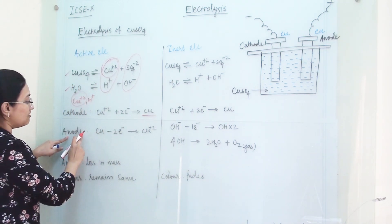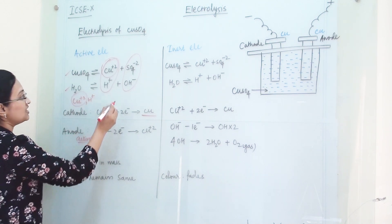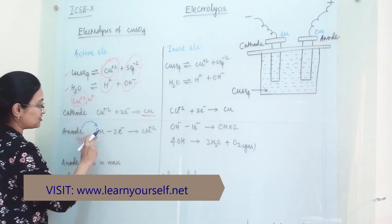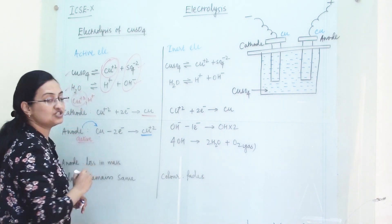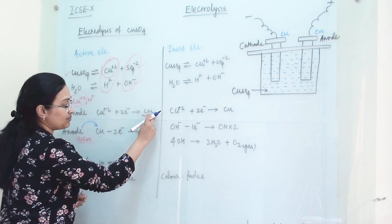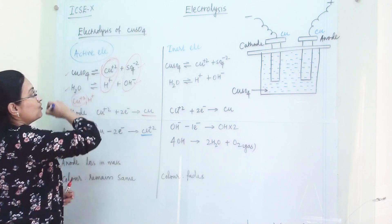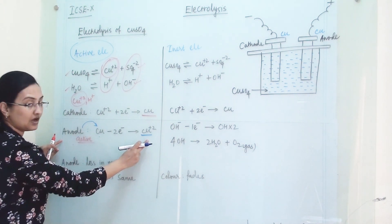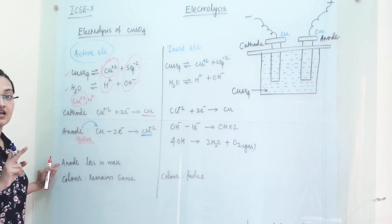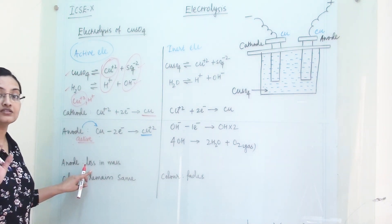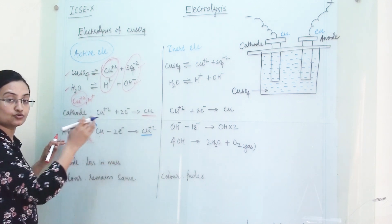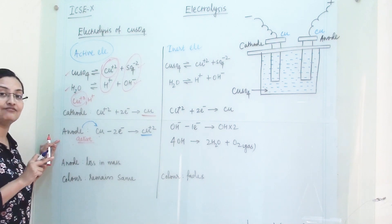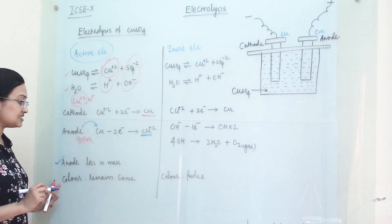At anode, our electrode is active. So even though SO4²⁻ and OH⁻ will migrate towards the anode, the electrode itself will take part in the reaction and it will generate Cu²⁺ ions. So our product will be copper metal at cathode and Cu²⁺ ions generated at anode. When the process is about to finish, we can see that the anode will lose some of its mass because it is giving up ions — slowly its mass will diminish. This happens when the electrode itself takes part in the reaction.